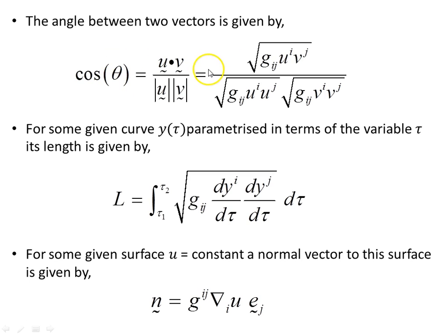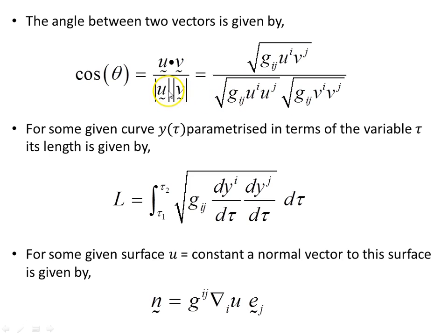The angle between two vectors uses the conventional form from vector calculus. Using the metric, we get expressions for the norm of u, the norm of v, and the scalar product u · v — all expressed in terms of the metric tensor components.